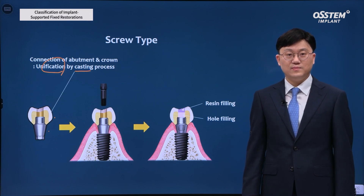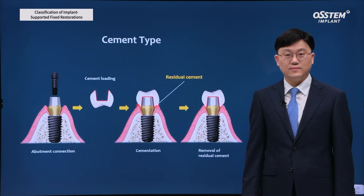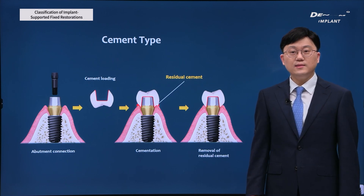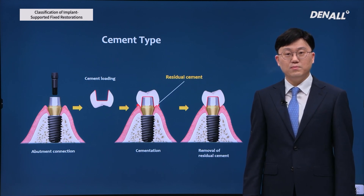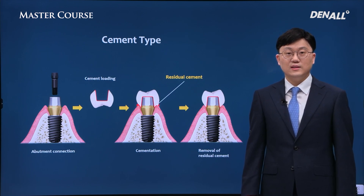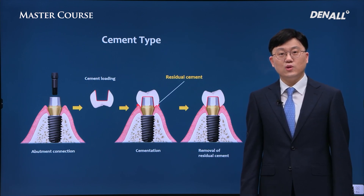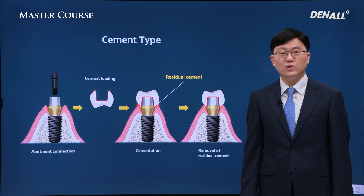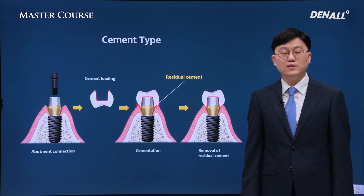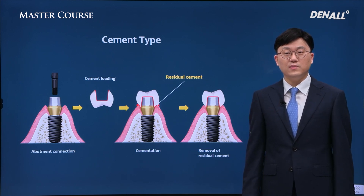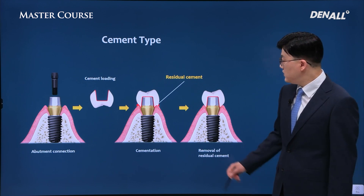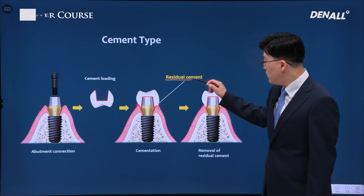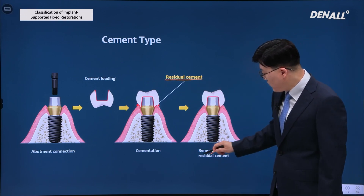On the other hand, as for cement type, the abutment is connected to the implant and then try-in of the crown is performed. In a similar way as you do prosthodontic treatment on natural teeth, the crown is tried-in, and finally after adjustment, cement is applied and it is bonded. In this case, there is residual cement, and removing residual cement is the most important aspect here.